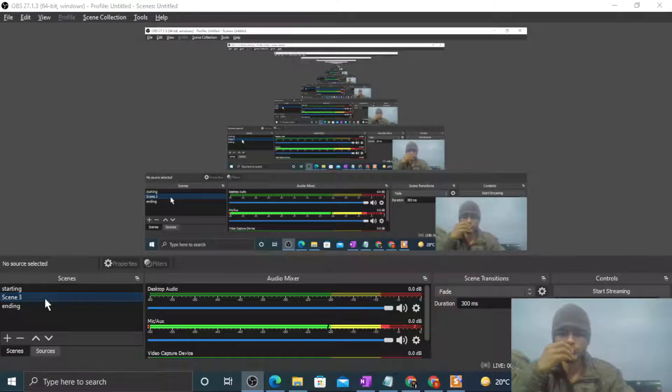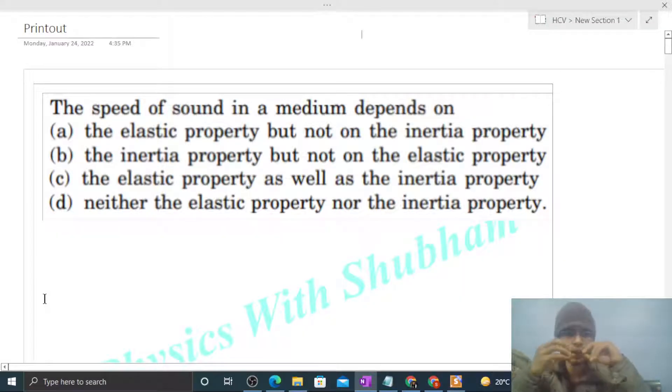Hi everyone, today let's discuss one interesting problem. The speed of sound in a medium - speed of sound in any medium is generally given by the square root of B divided by rho.